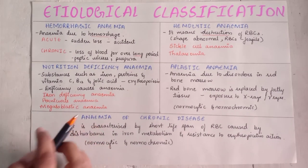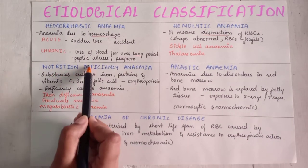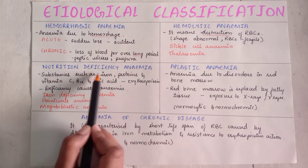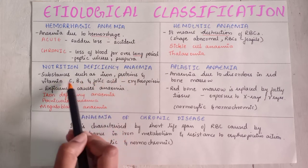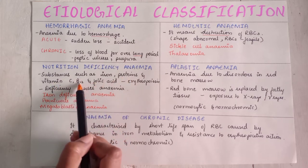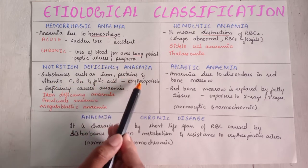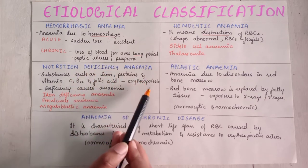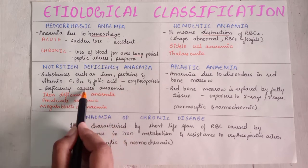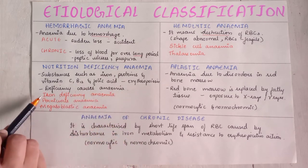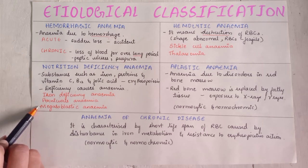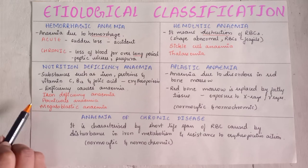Third: nutritional deficiency anemia. Substances such as iron, proteins, vitamin C, vitamin B12, and folic acid are responsible for erythropoiesis. When there is a deficiency of these, it leads to nutritional deficiency anemia. Iron deficiency anemia, pernicious anemia, and megaloblastic anemia all come under this category.